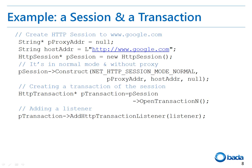Now let's take a look at this in more detail using the example source code. Let's see how to create a session and a transaction. First, I set the proxy address and host address strings. Then I create an HTTP session and construct this session with the HTTP mode, proxy address, and host address parameters. Then, I receive a transaction from the session using the OpenTransactionN function which returns a transaction pointer. Then I specify a listener to this transaction.